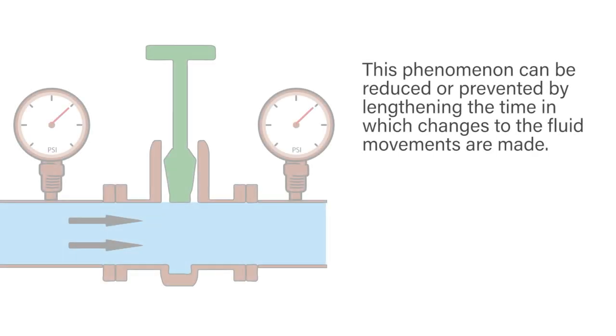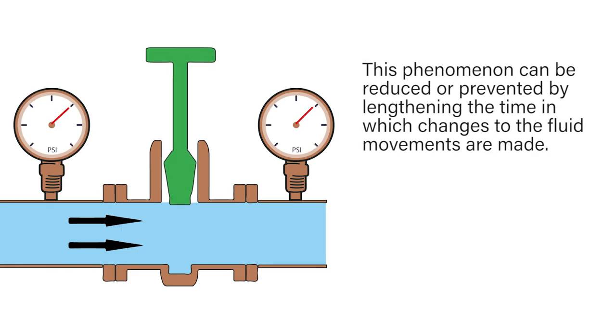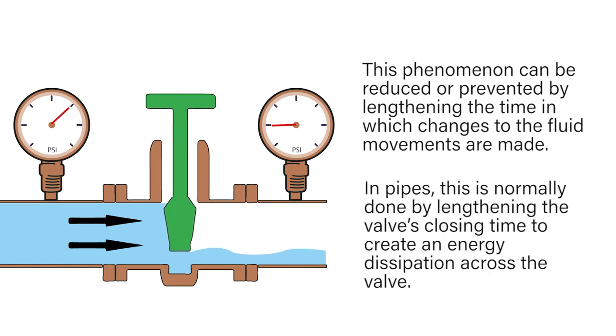This phenomenon can be reduced or prevented by lengthening the time in which changes to the fluid movements are made. In pipes, this is normally done by lengthening the valve's closing time to create energy dissipation across the valve.